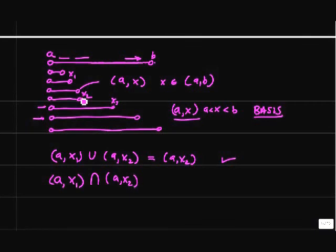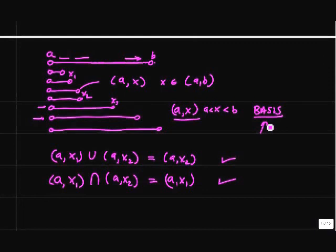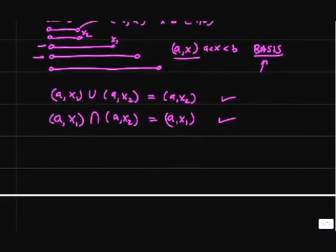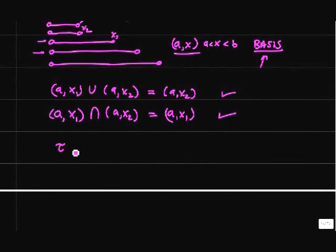What about intersections? Since X2 is greater than X1, the intersection of these two line segments is going to be the points in common, which is the shorter of the two intervals: AX1. Those two sets generated by taking the union and intersection are already contained in our basis. By taking unions, we do not generate any disjoint intervals — we just get back the larger of the two intervals. So that means our basis constructed this way is a topology.